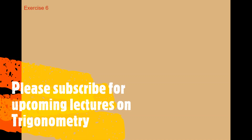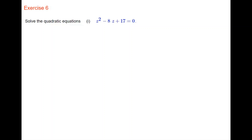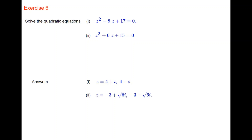In this last exercise, solve two quadratic equations using both methods — completing the square and the quadratic formula. The first is z squared minus 8z plus 17 equals 0, and the second is z squared plus 6z plus 15 equals 0. The answers are: first equation, z equals 4 plus i and 4 minus i; second equation, z equals minus 3 plus root 6 times i, and minus 3 minus root 6 times i.